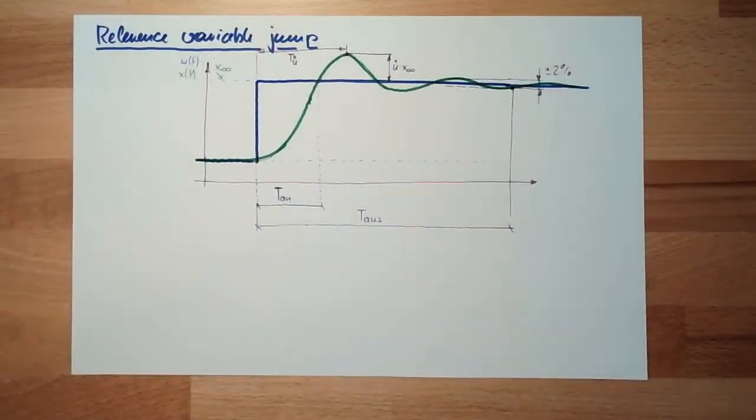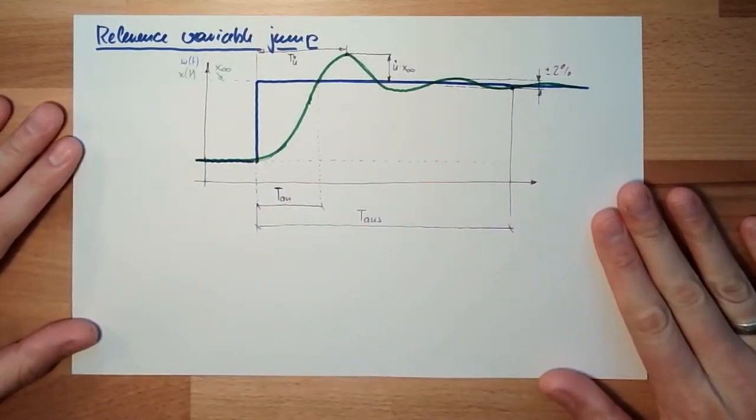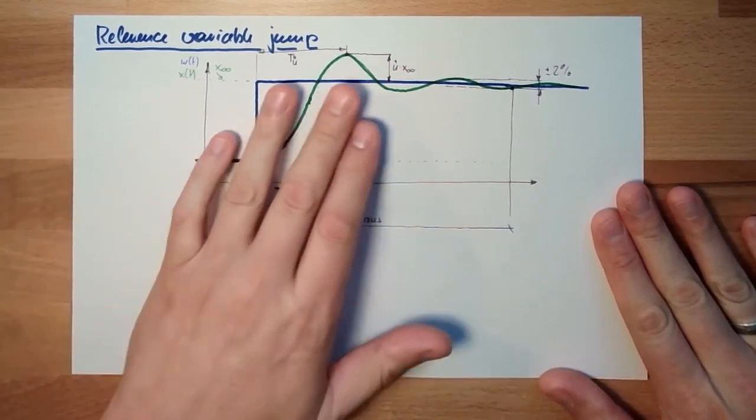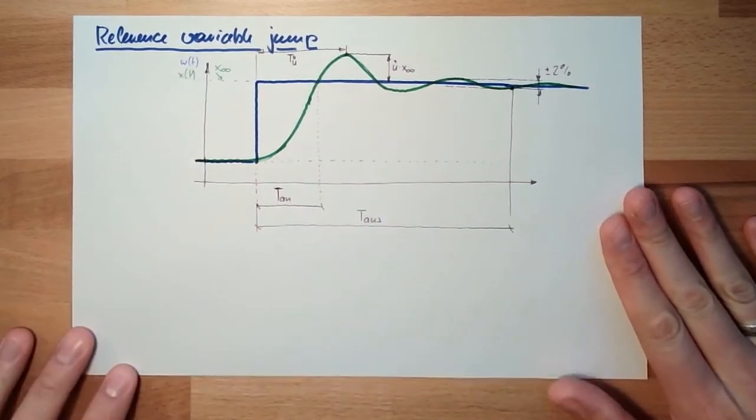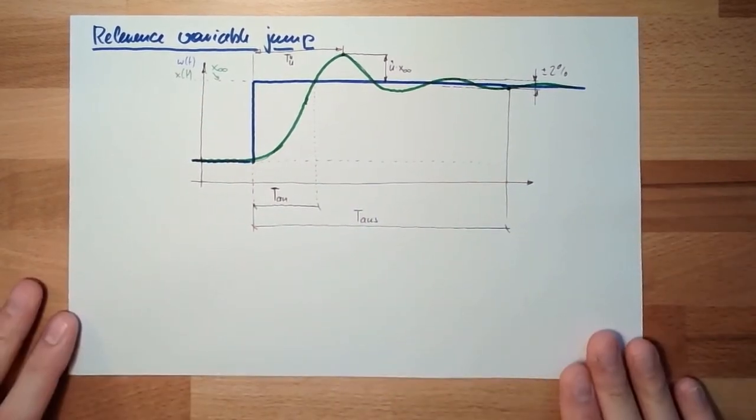Hello and welcome back. This picture from last time, reference variable jump, shows some characteristic values. How good or how bad is this? How can I compare two different control systems?